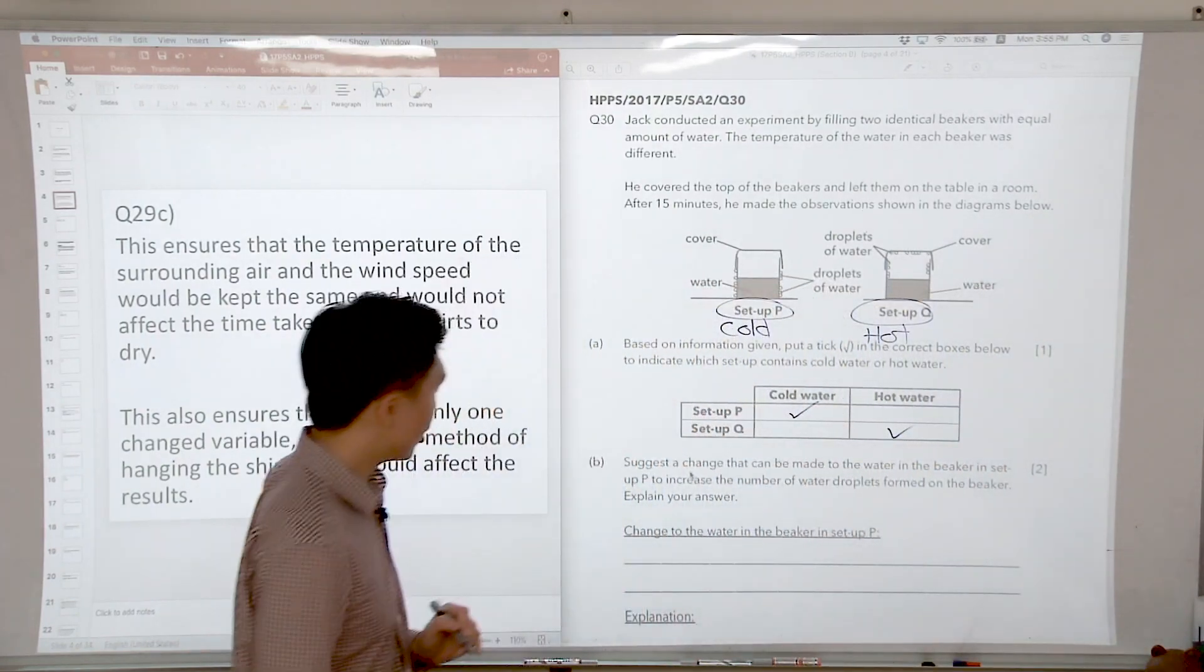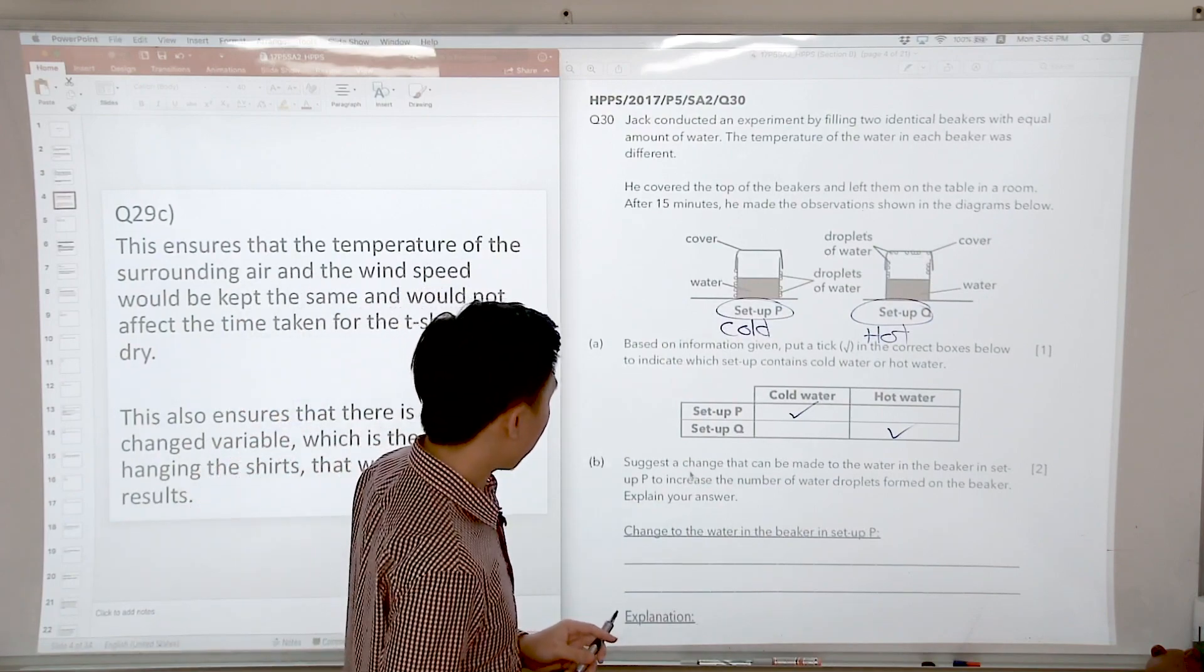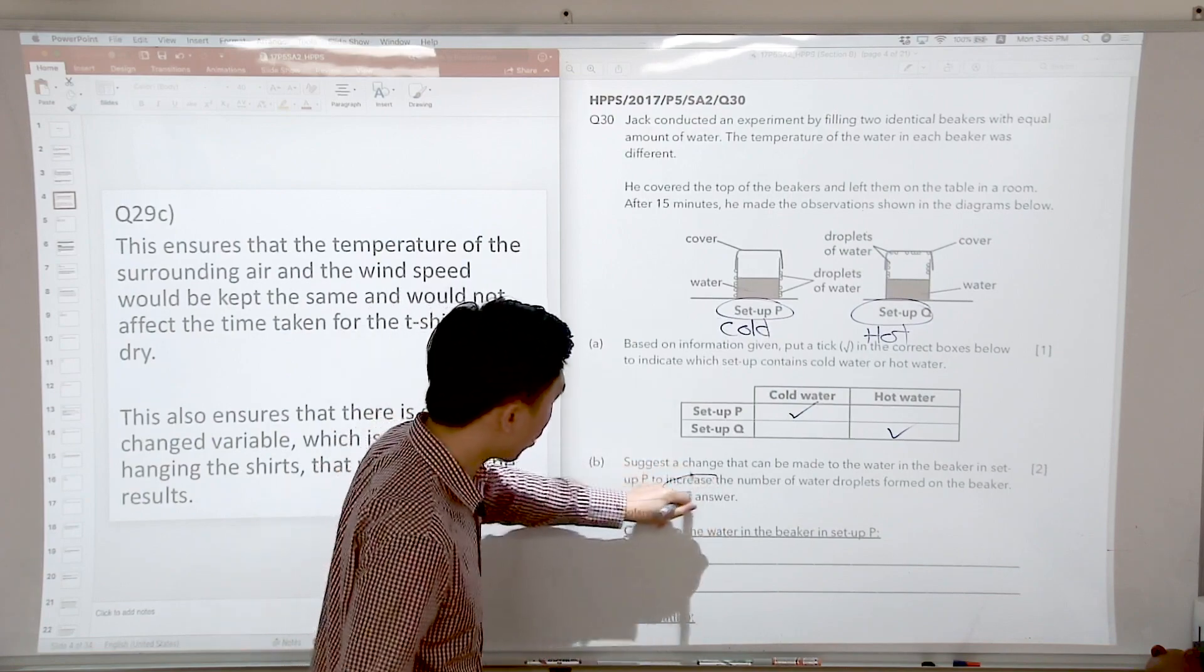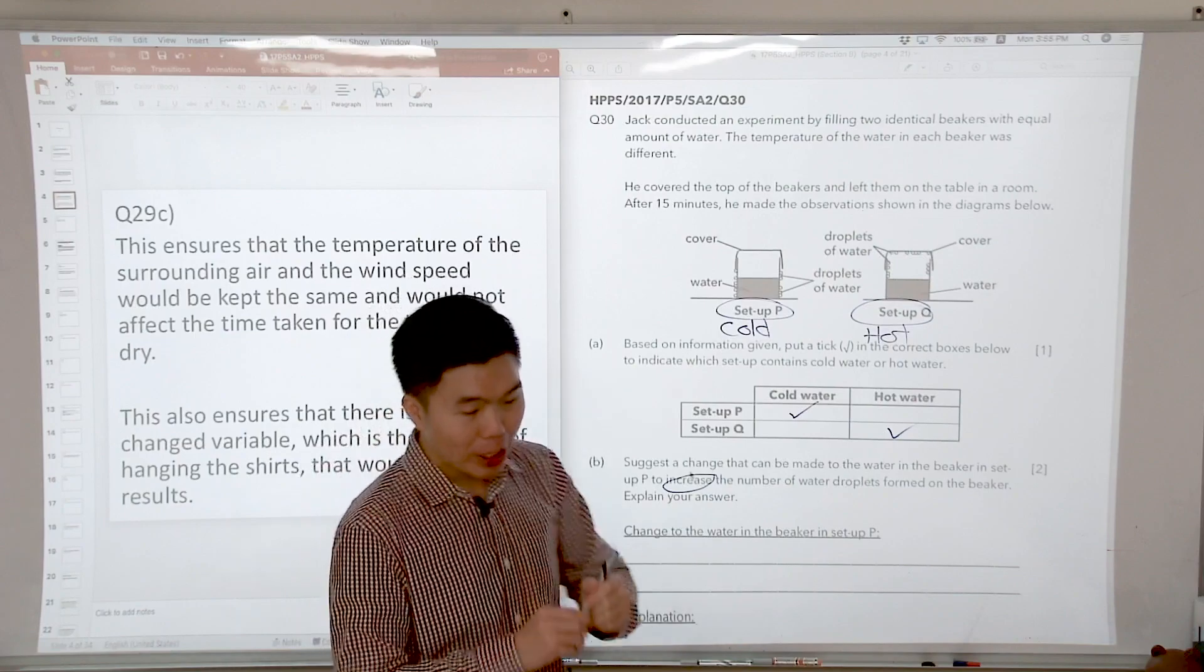So let us look at B. Suggest a change that can be made to the water in the beaker in setup P to increase the number of water droplets formed. So the key thing here is to increase. I want you to picture this scenario.